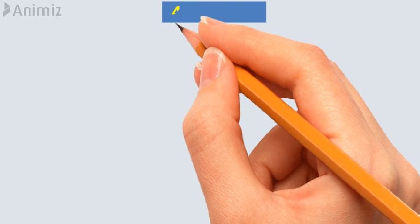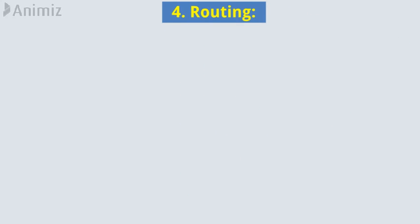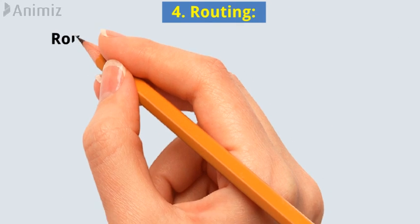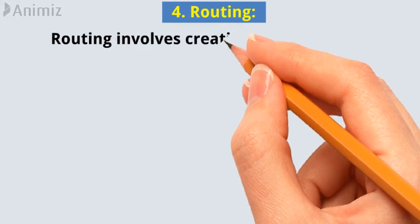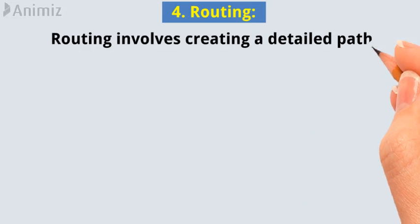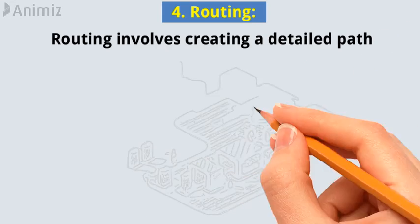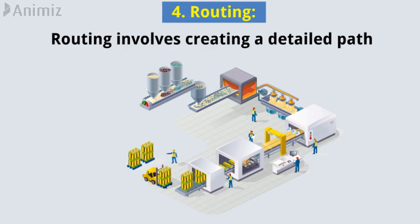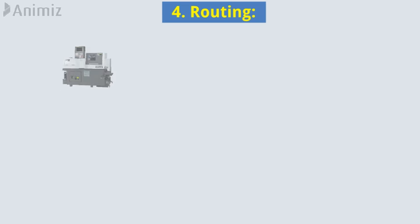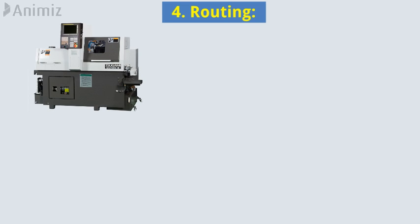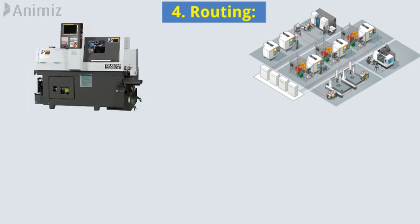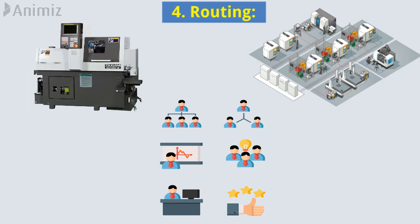4. Routing: Routing involves creating a detailed path that a product follows through the manufacturing process. It includes the specific machines, workstations, or departments where each operation will take place.